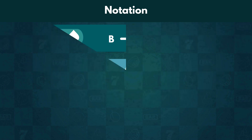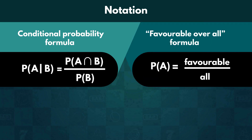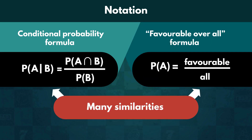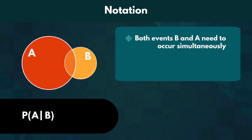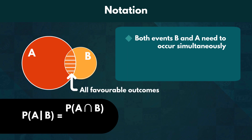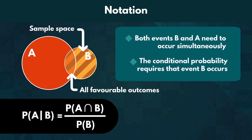Now, let's look at the conditional probability formula more closely. If we compare it to the favorable-over-total formula, we can see many similarities. To satisfy the conditional probability, we need both events B and A to occur simultaneously. This suggests that the intersection of A and B would consist of all favorable outcomes for this probability. Secondly, the conditional probability requires that event B occurs, so the sample space would simply be all outcomes where event B is satisfied. Everything fits into place now, doesn't it?